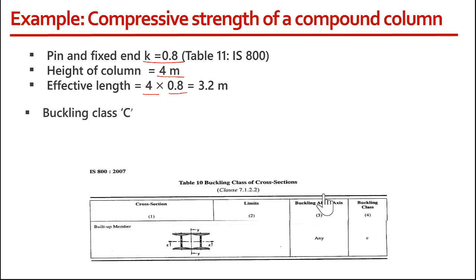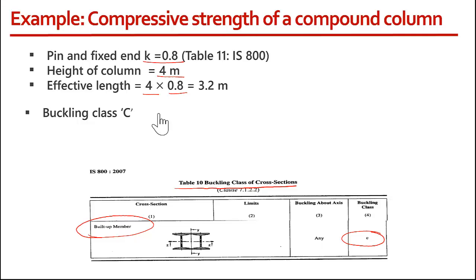The next thing we need to find is the buckling class of this section. This is a built-up section because we have built it by attaching cover plates. From Table 10 of IS 800, the buckling class for a built-up member is C. The K value of 0.8 used to find effective length can also be confirmed from Table 11.